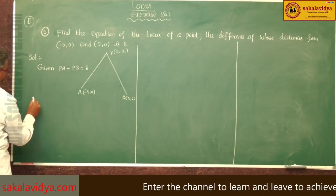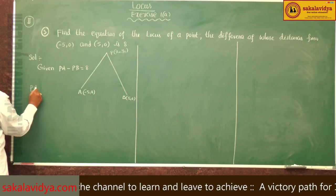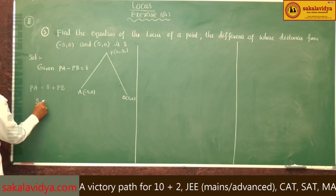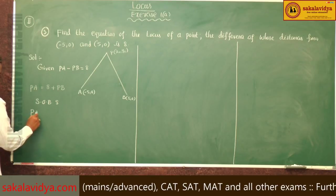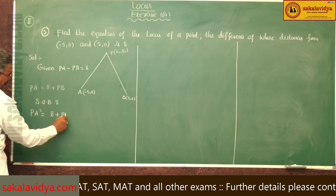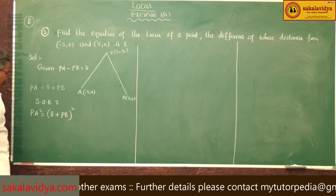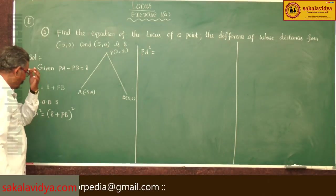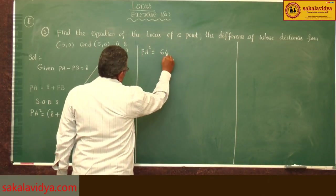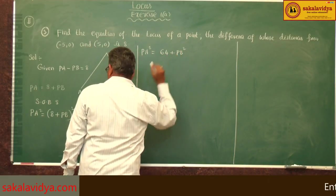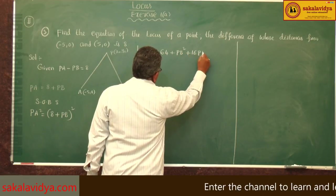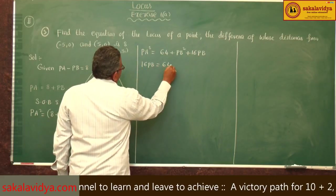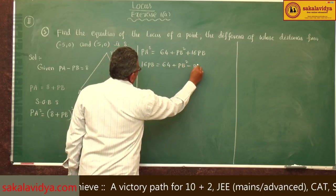Bringing PB to the other side, we get PA equals 8 plus PB. Squaring on both sides, PA squared equals (8 plus PB) squared, which equals 64 plus 16·PB plus PB squared. So PB squared minus PA squared we can write.